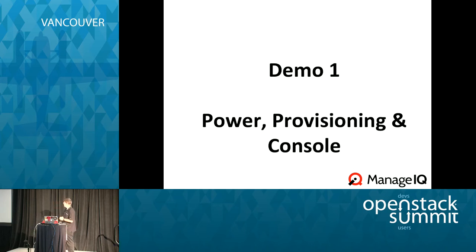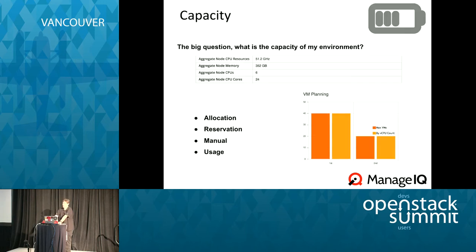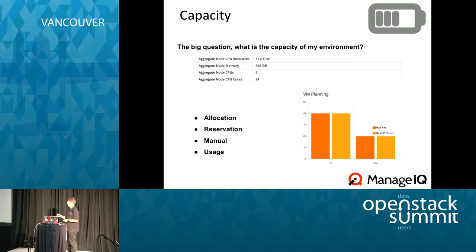Demo time. I've recorded the demos for safety so they won't go wrong. The first one is about capacity and utilization. The question is: how much capacity does my environment really have? ManageIQ goes across all your nodes, hosts, clusters, resource pools, vApps, pods — everything — and can give you your capacity. Because we have that capacity and utilization story, we can use it for planning.